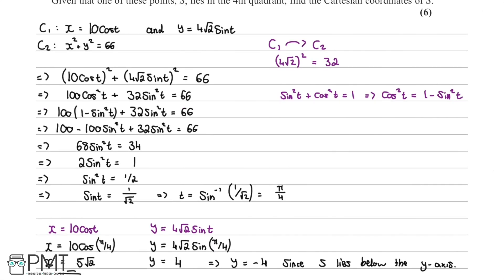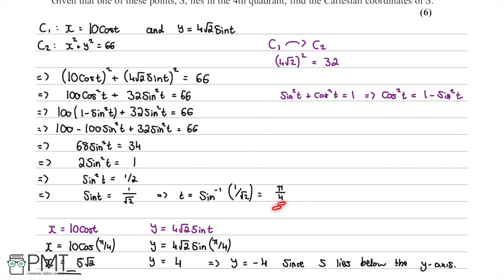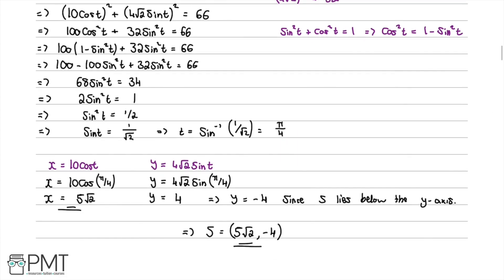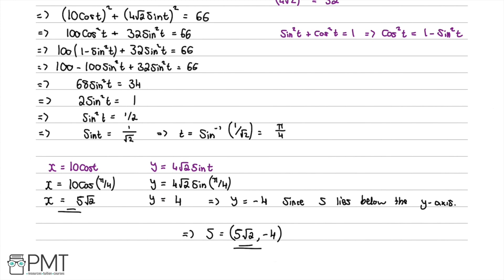This question was worth 6 marks. The first mark is for substituting the parametric equations of C1 into C2. The second mark is for identifying the trig identity sin²(t) + cos²(t) = 1. The third mark is for substituting it into the equation. The fourth mark is for reaching sin(t) = 1/√2. The fifth mark is for solving to get t = π/4. The sixth mark is for substituting back and concluding that S has coordinates (5√2, -4).